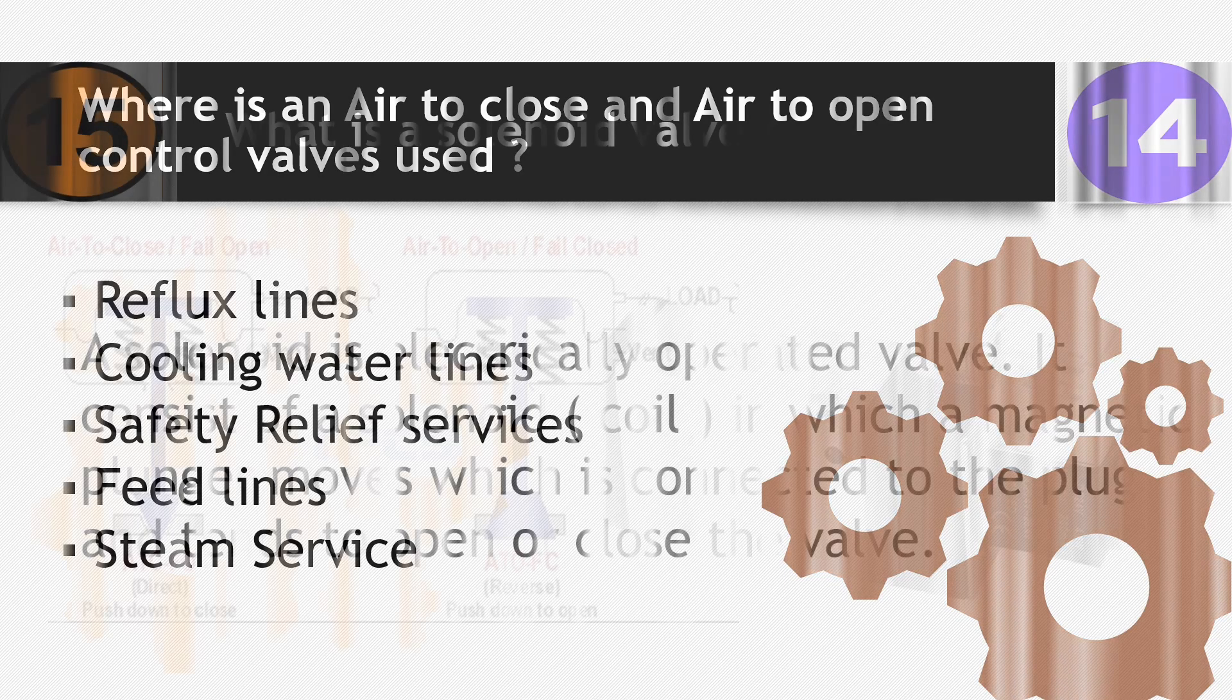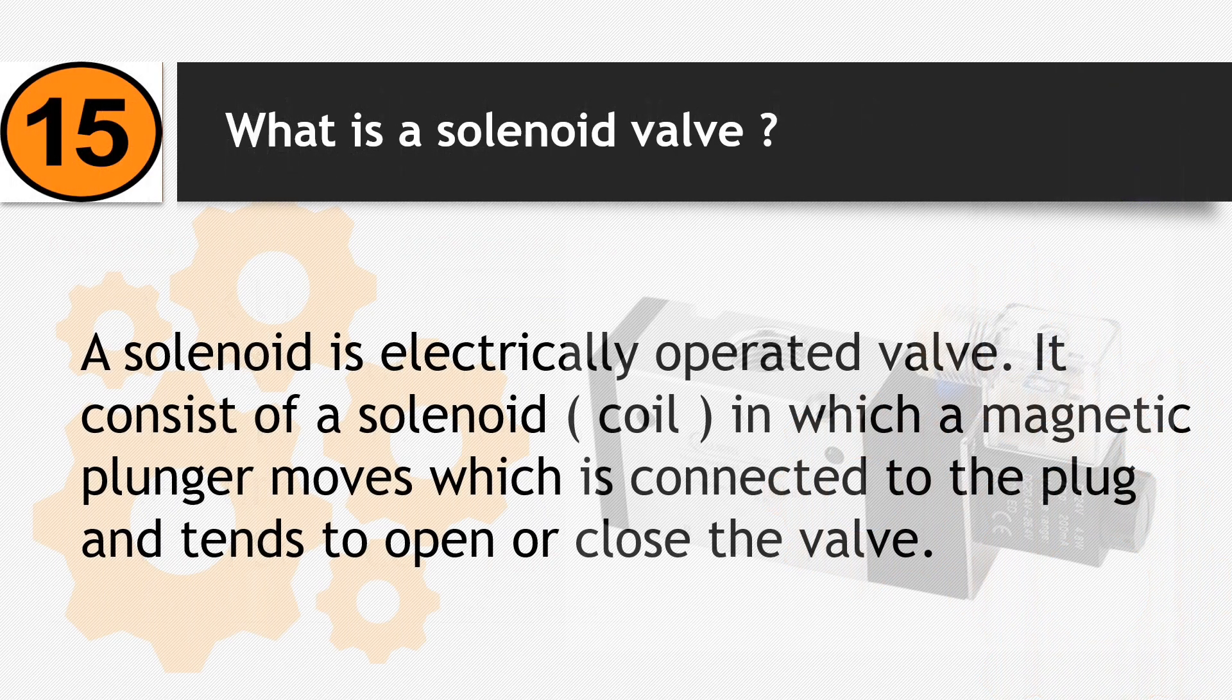Number 15: What is a solenoid valve? A solenoid is an electrically operated valve. It consists of a solenoid coil in which a magnetic plunger moves, which is connected to the plug and tends to open or close the valve.